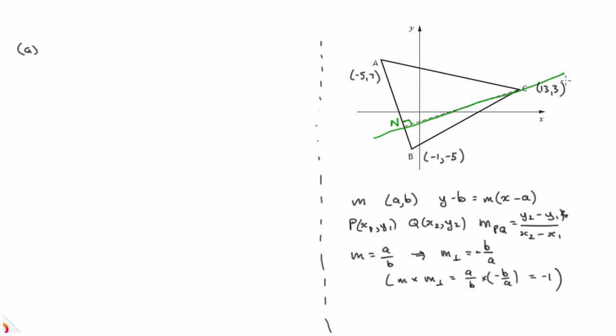Do we know a point on this altitude CN? Yes, we do. We know that C lies on it. Do we know its gradient? No, we don't. But we know that this altitude is perpendicular to side AB. So let's first work out the gradient of side AB. Here are the coordinates of the two points A and B. Using this result, y difference over x difference, we can work out the gradient of side AB.